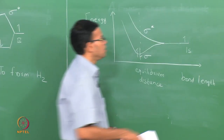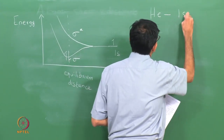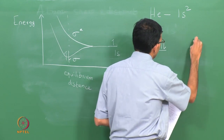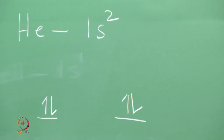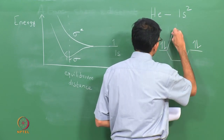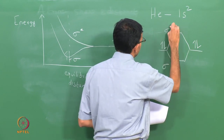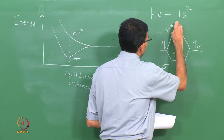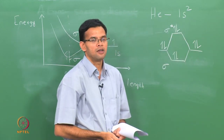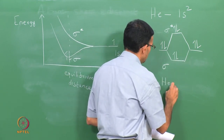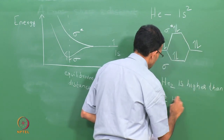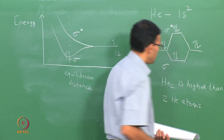We can use the same diagram to explain why He₂ does not form. Helium has 2 electrons in the 1s shell. If 2 helium atoms come together, the 1s orbitals again mix to form σ and σ*. But now we have 4 electrons total: 2 go into σ and 2 go into σ*. The overall energy of He₂ is higher than that of 2 separate helium atoms — that is why He₂ does not form.